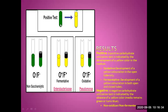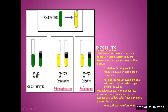In the results, if there is a yellow color change, the test is positive for oxidative or fermentative activity. The oil layer indicates the anaerobic environment. If both aerobic and anaerobic tubes remain green, oxidation is negative and fermentation is negative. If both tubes show yellow, both oxidation and fermentation are positive. If only the aerobic tube turns yellow, oxidation is positive but fermentation in the anaerobic tube is negative.